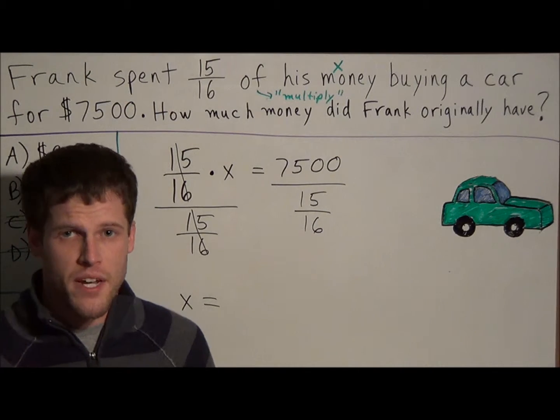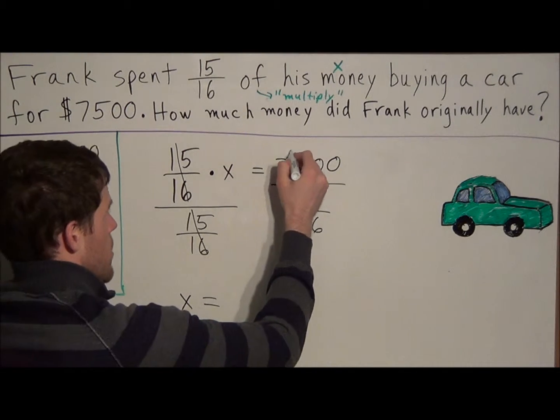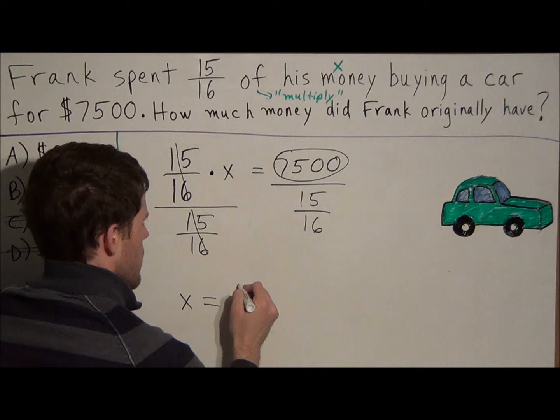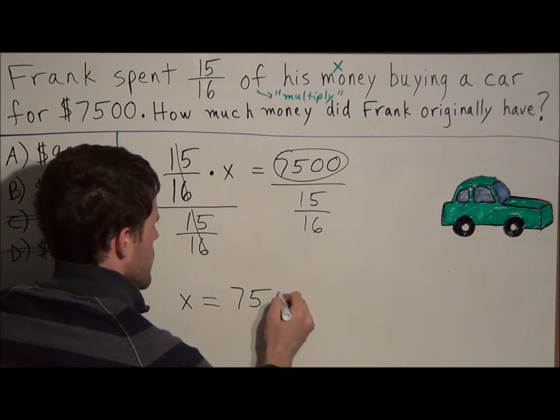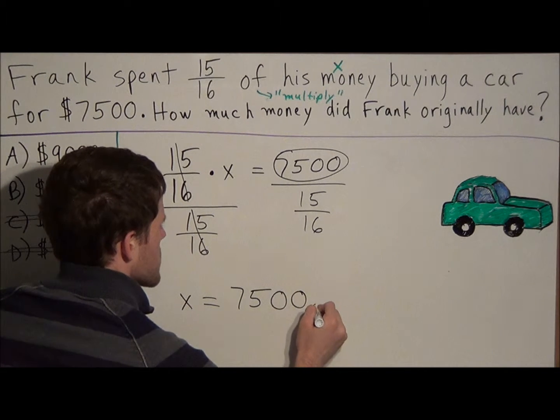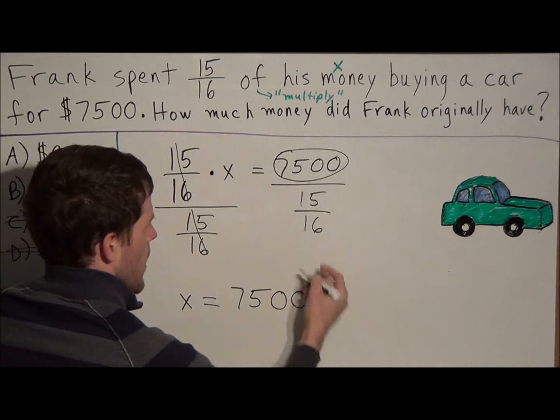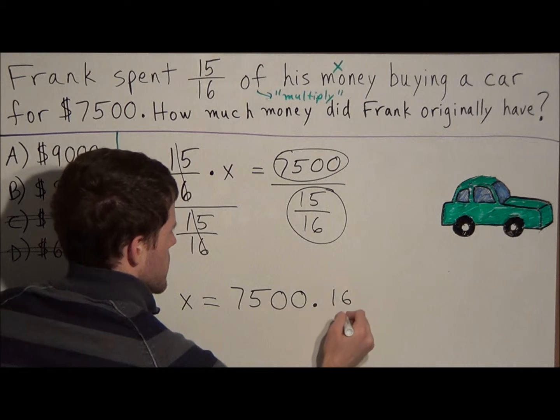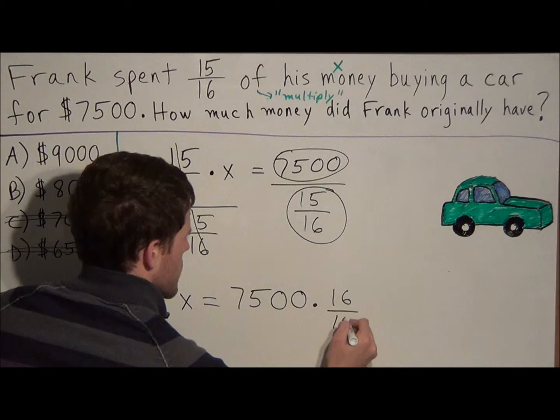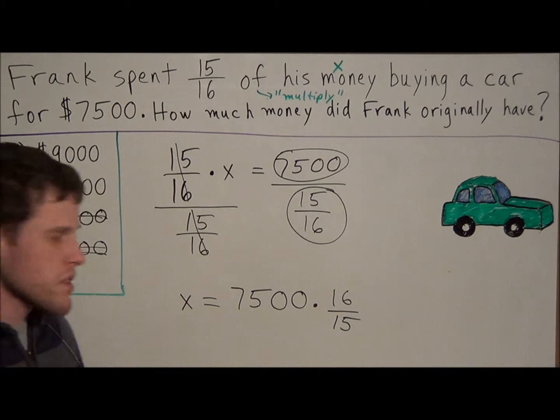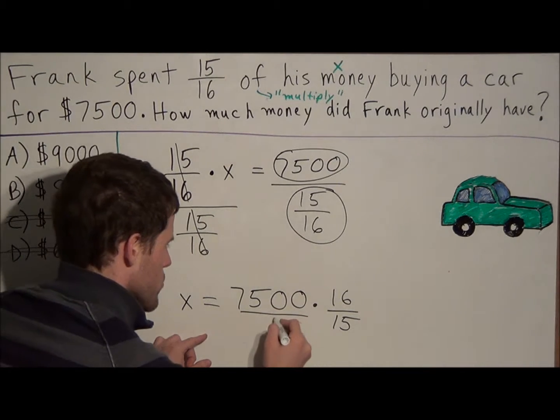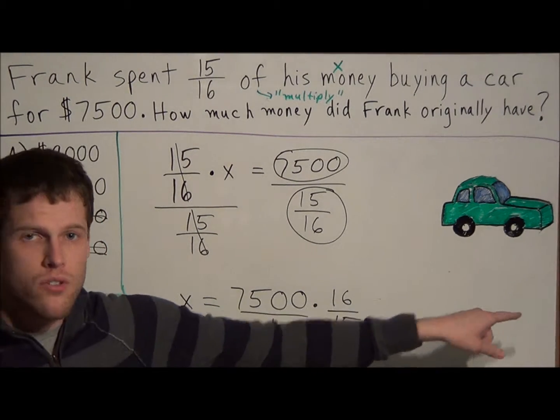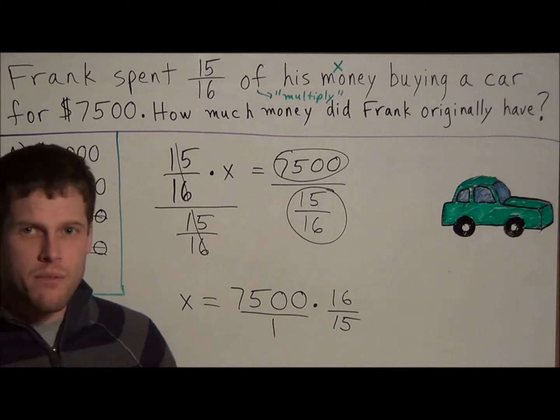and now we could use the keep-change-flip technique. We're going to keep the 7,500, we change this operation to multiplication, and now we could flip the fraction on bottom. We're going to flip this fraction to 16 over 15. Now if we wanted to go forward with this, we could call this 7,500 over 1 and just multiply across, but it's much easier to simplify first.